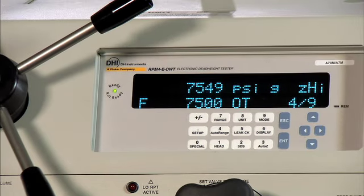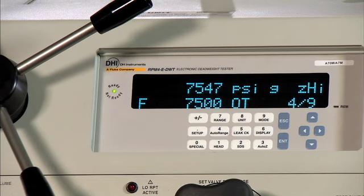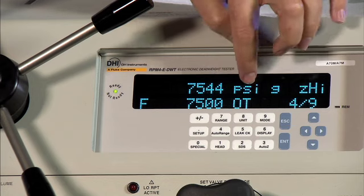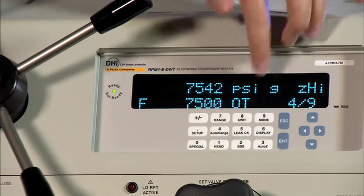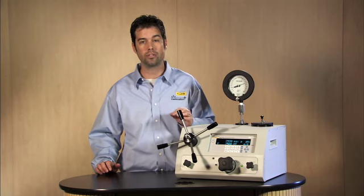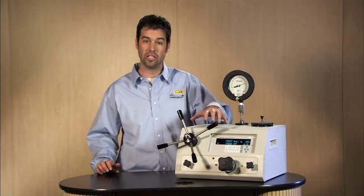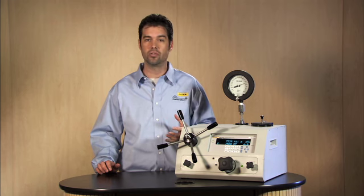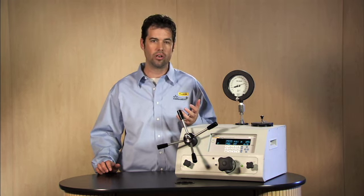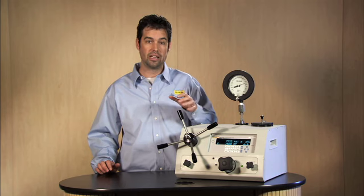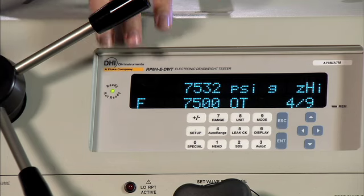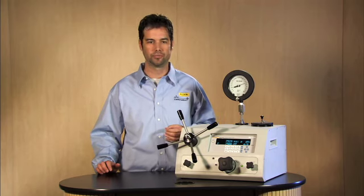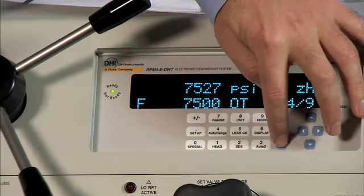That value, that tone that you just heard, is the tone that says out of tolerance. And it also indicates OT, out of tolerance. Every single one of these points, in tolerance or out of tolerance, is being logged internally on the RPM4, where you can retrieve these values either via a computer or you can go back on the main run screen and observe what those values are. You can store up to 10 files. So push enter to acknowledge it.